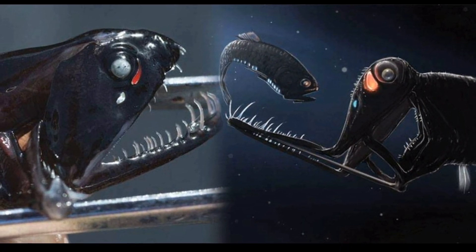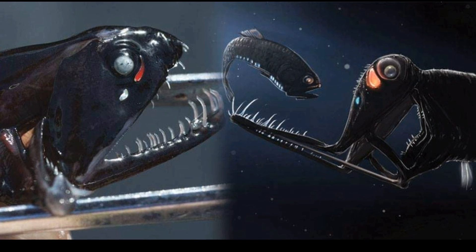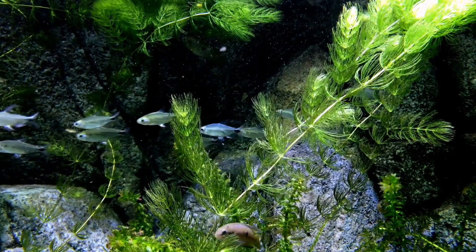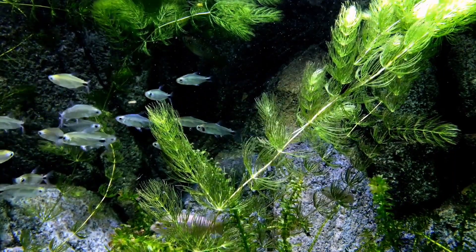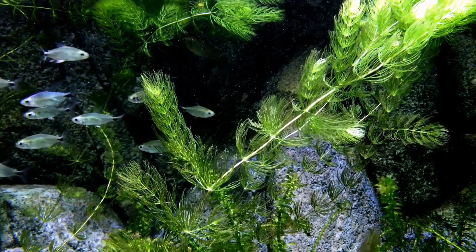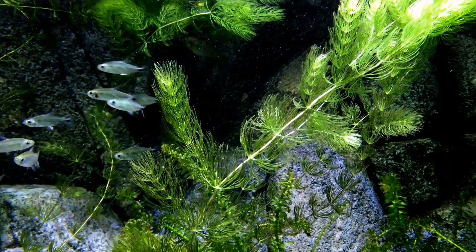Number 5, there is a deep sea fish named Stoplight Loosejaw that takes advantage of the fact that fish can't see red light, and illuminates its prey with a beam of red bioluminescence so it can hunt with an effectively invisible beam of light. Yes, just a regular advantage of nature.